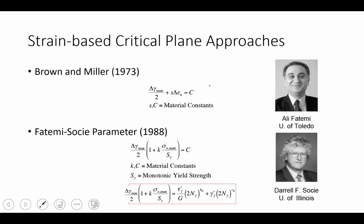More recent efforts include those by Brown and Miller in 1973. The most successful approach continuing to be used today is the Fatemi-Socie parameter developed in 1988. We should recognize Fatemi and Socie because these are the authors of the textbook we're using in this class. In the Fatemi-Socie parameter, we have a mixed approach with a term based in strain — shear strain amplitude — and a term based in strain energy where we have strain times stress. Since we're normalizing stress, this is actually a pure strain approach.